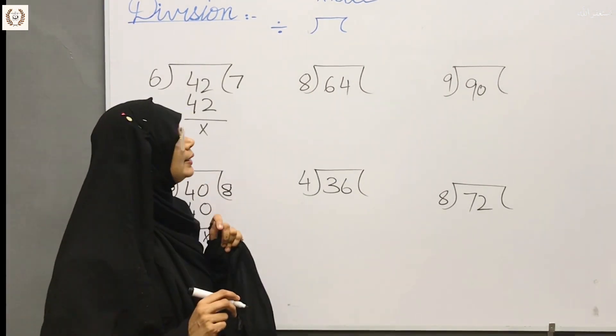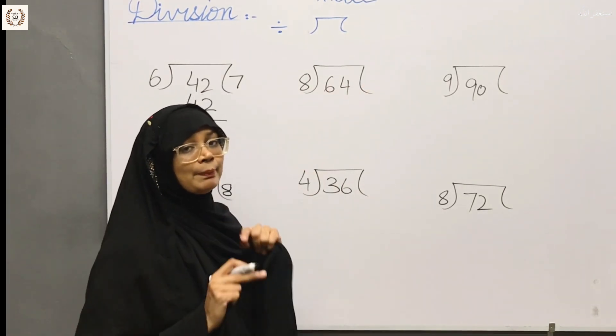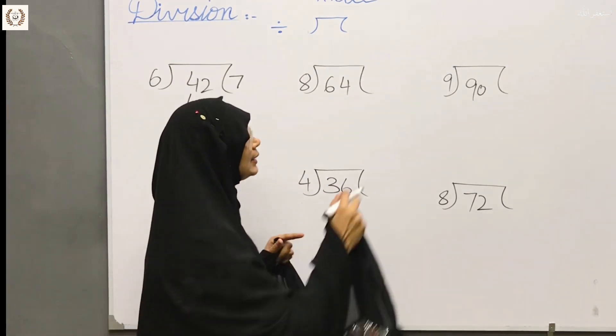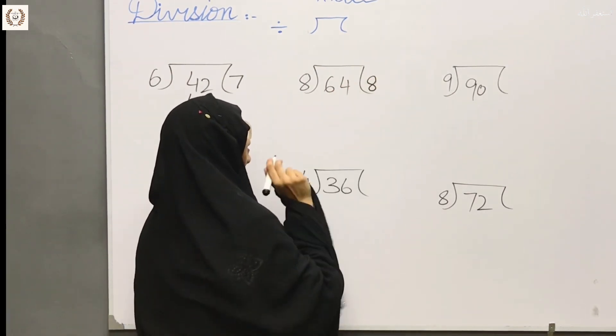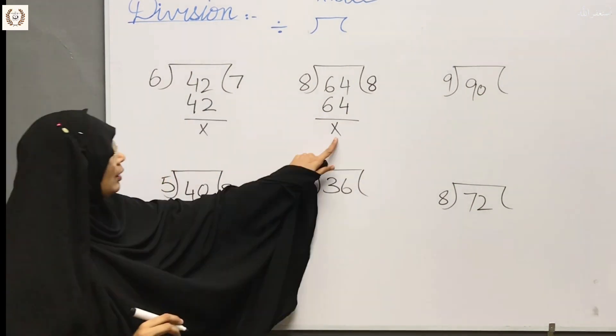This sum is what we have to do. 64 is inside and 8 is outside. So you have to learn 8. When you learn 64, 8 is outside. 64 is inside. Cross.